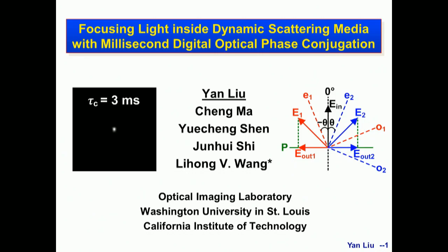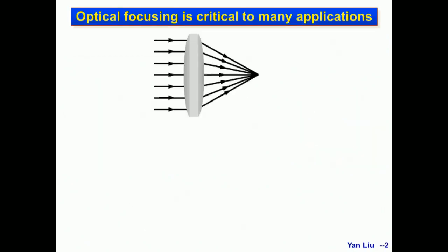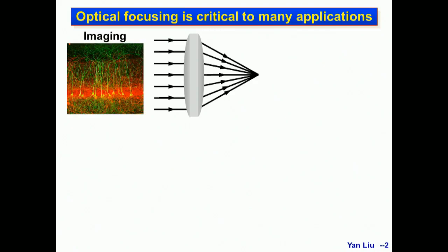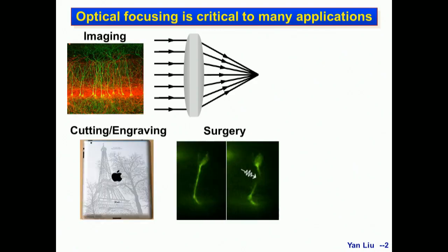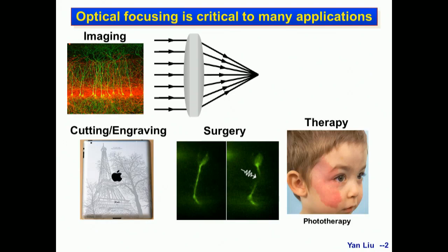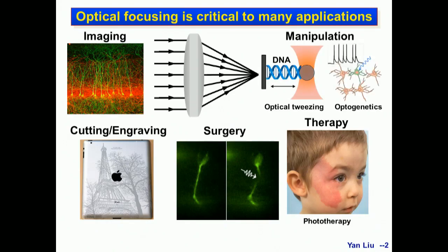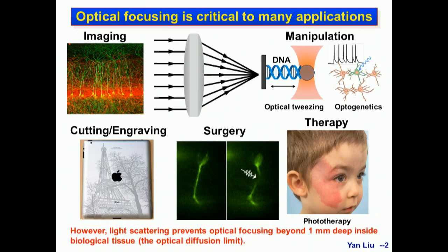First, let me explain why it is highly desired to focus light inside scattered media. Optical focus is critical to many applications such as optical imaging, laser cutting, laser surgery, phototherapy, and optical manipulation such as optical tweezing and optogenetics. However, light scattering prevents optical focusing beyond one millimeter deep inside biological tissue, which limits all these applications to shallow depths. So it is highly desired to break this optical diffusion limit and focus light deep inside scattered media.